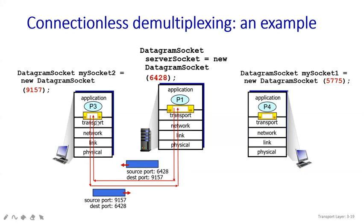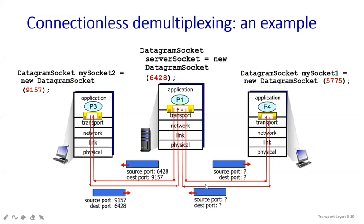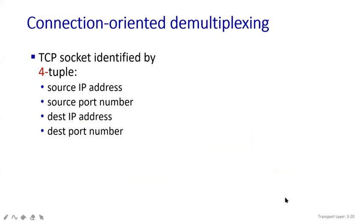The message acknowledgement has been sent back to the client or source side. For another source with a different port number, the source port is 6428 and destination is 5775. When the acknowledgement returns, the source port becomes 5775 and the destination port becomes 6428. That is how it works in UDP. Now let's see how connection-oriented demultiplexing — also known as TCP — works.